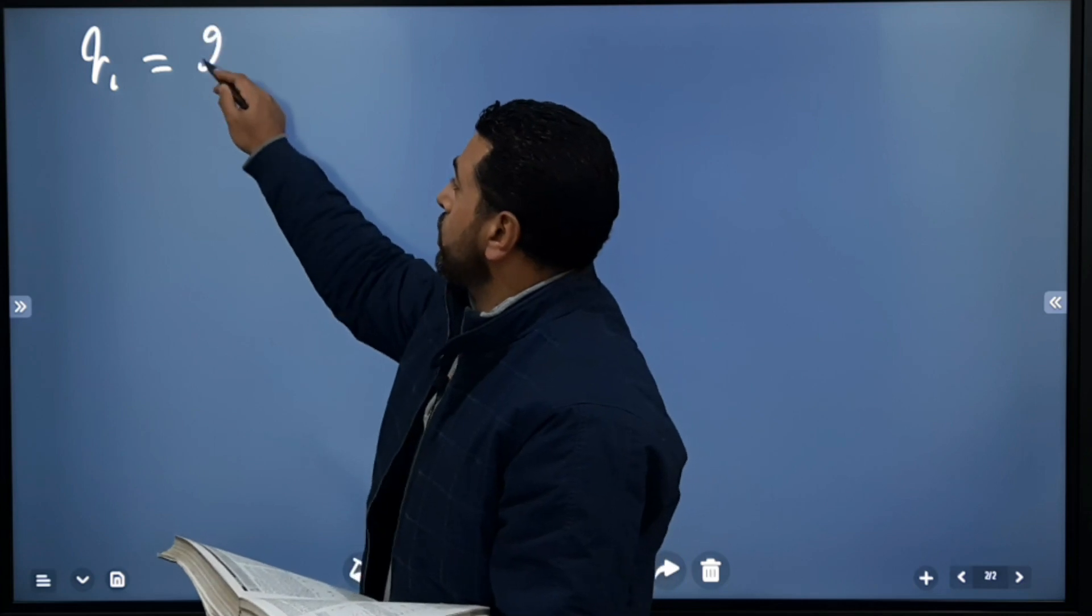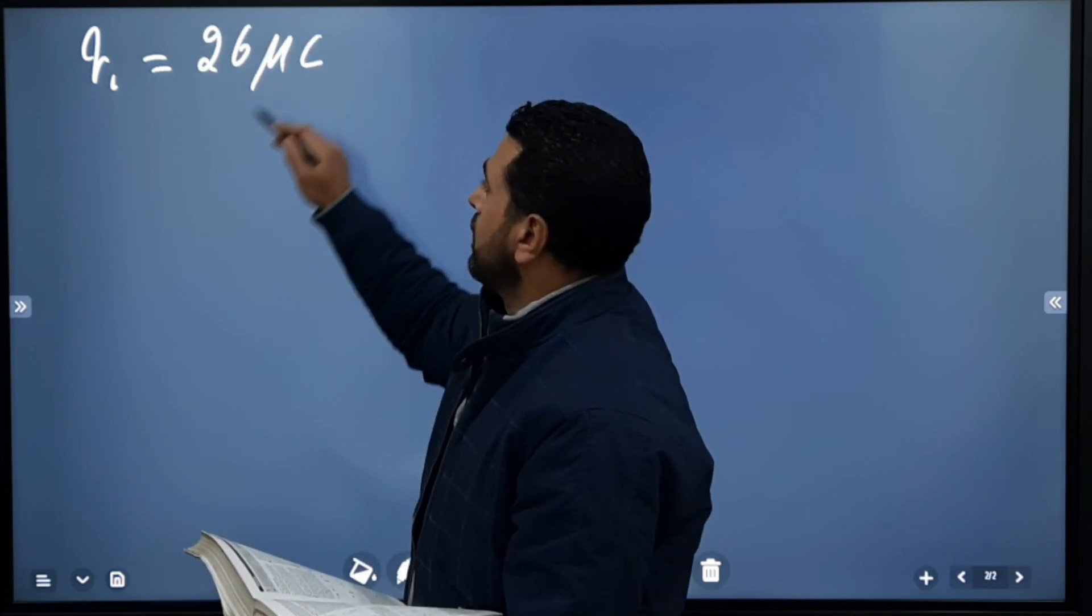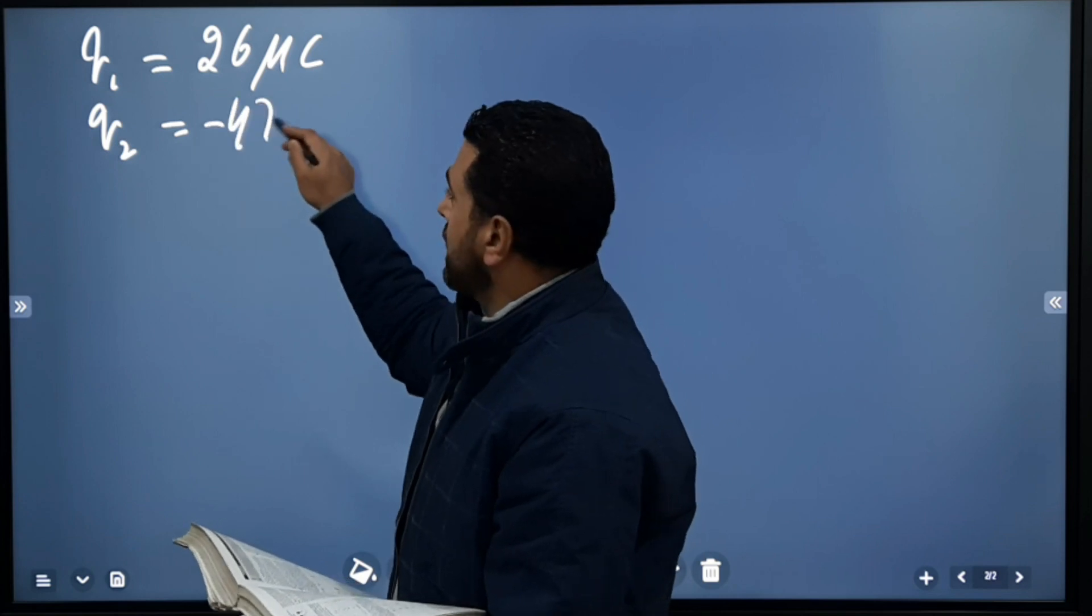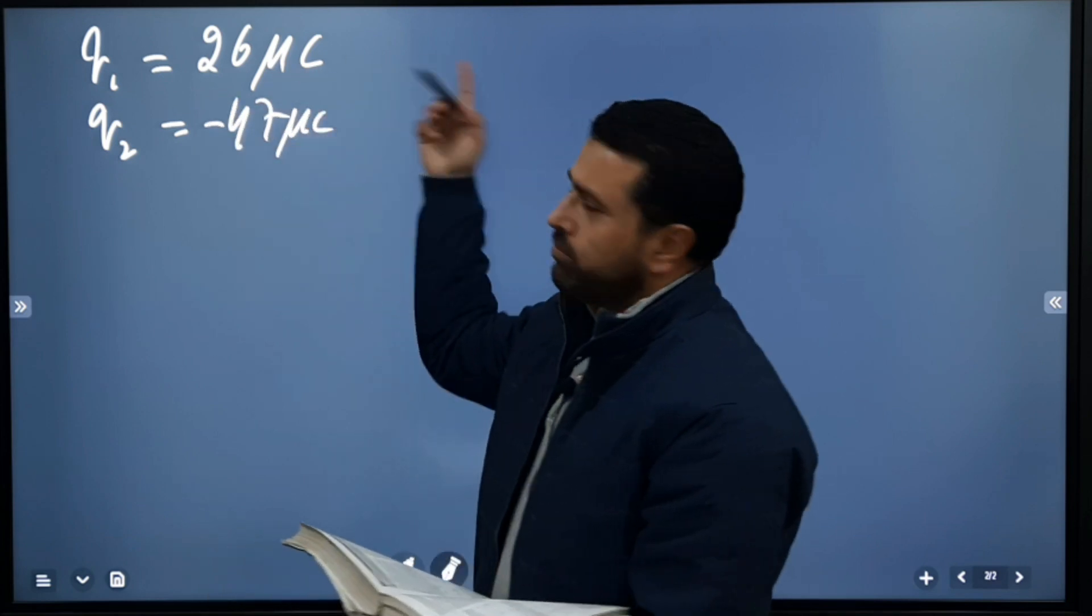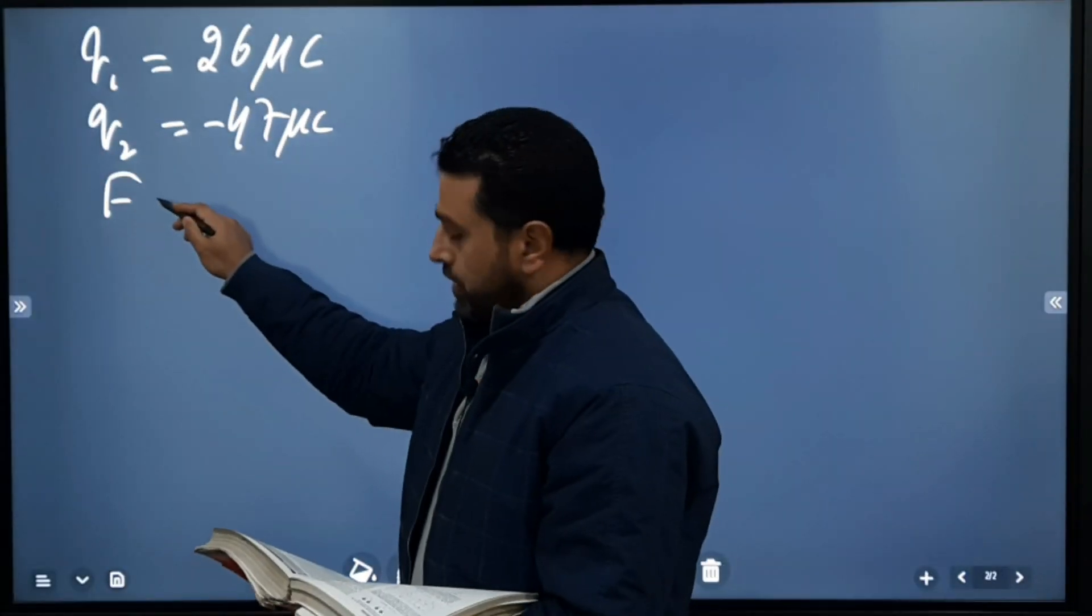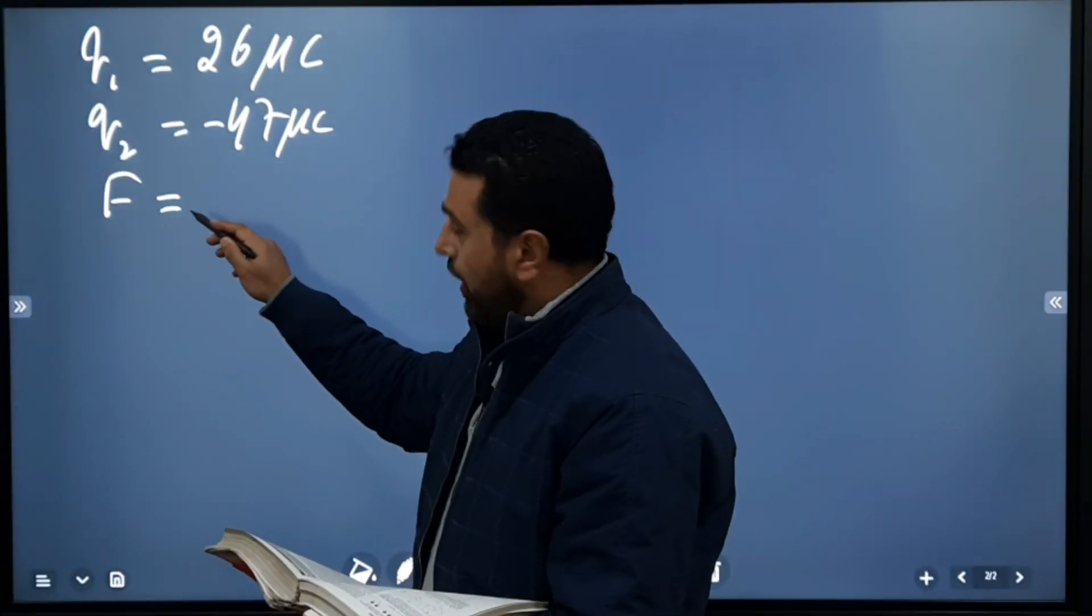And q2 is given as -47 microcoulombs. Micro means we have to multiply it by 10 to the power -6. Force is given between them. The force is equal to 5.7 Newtons.